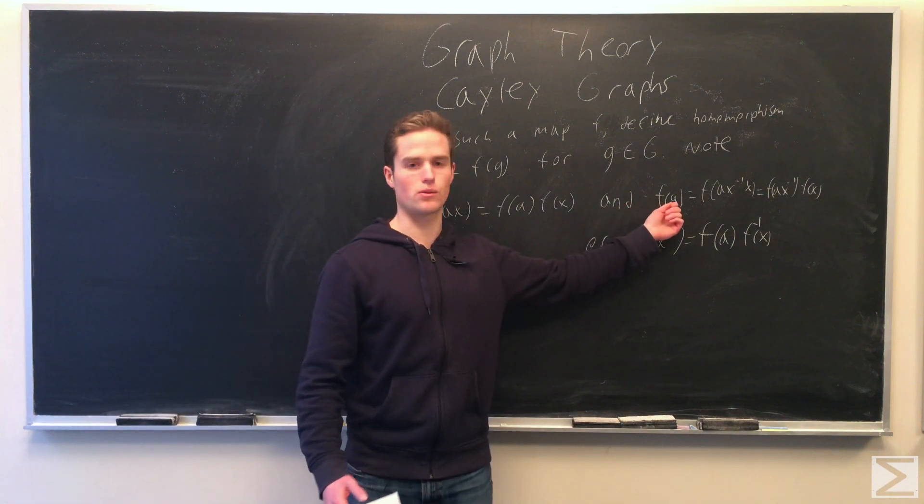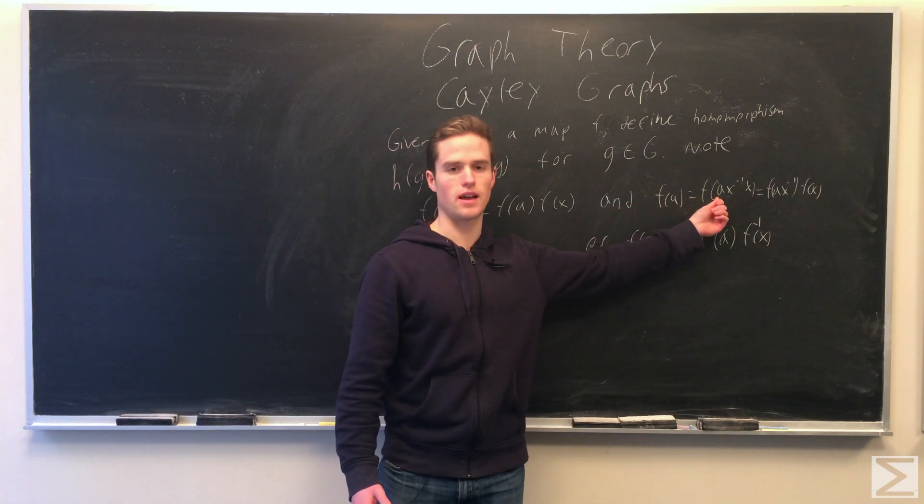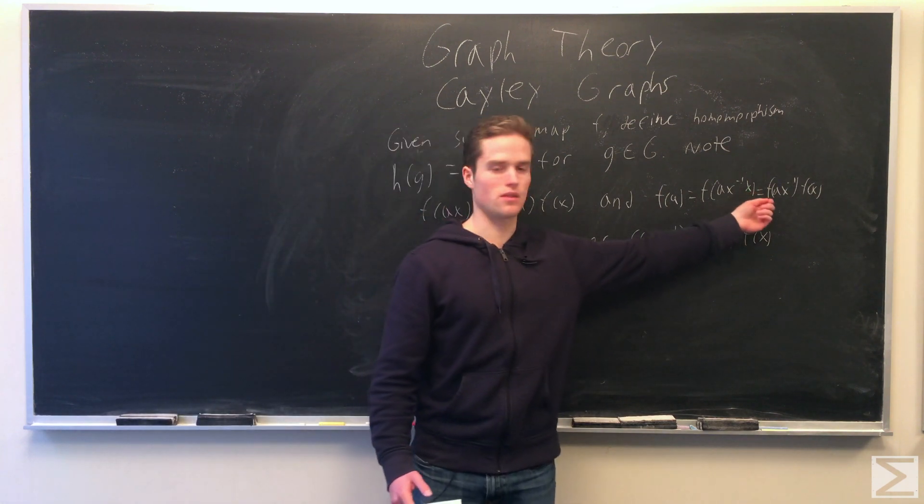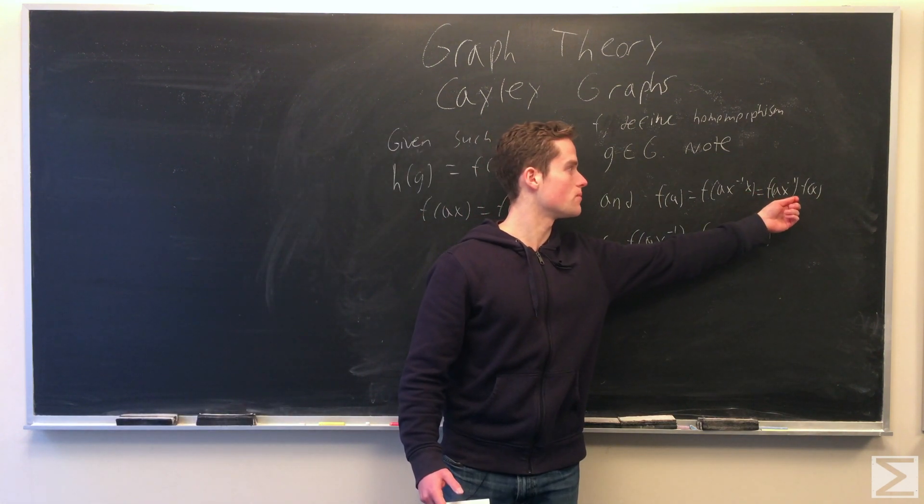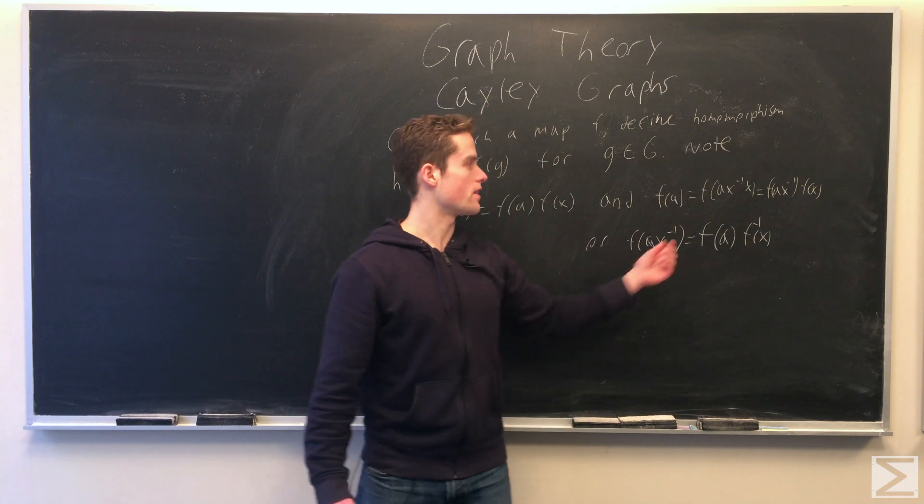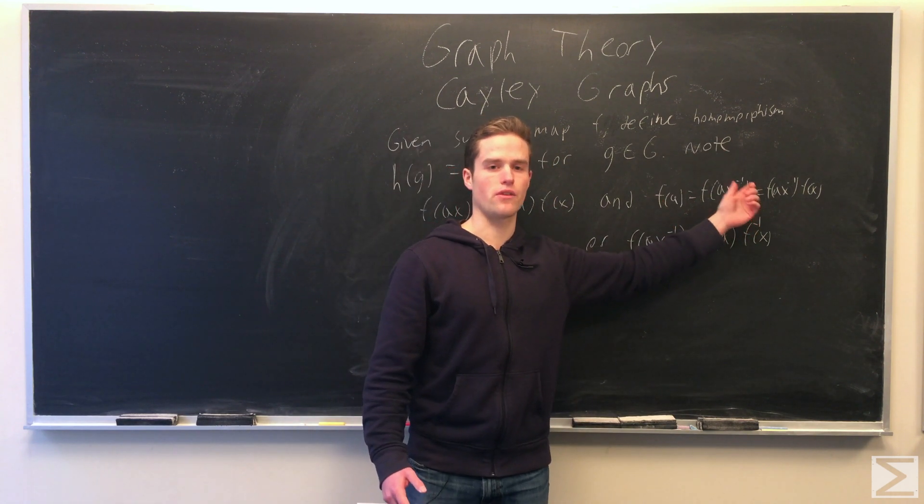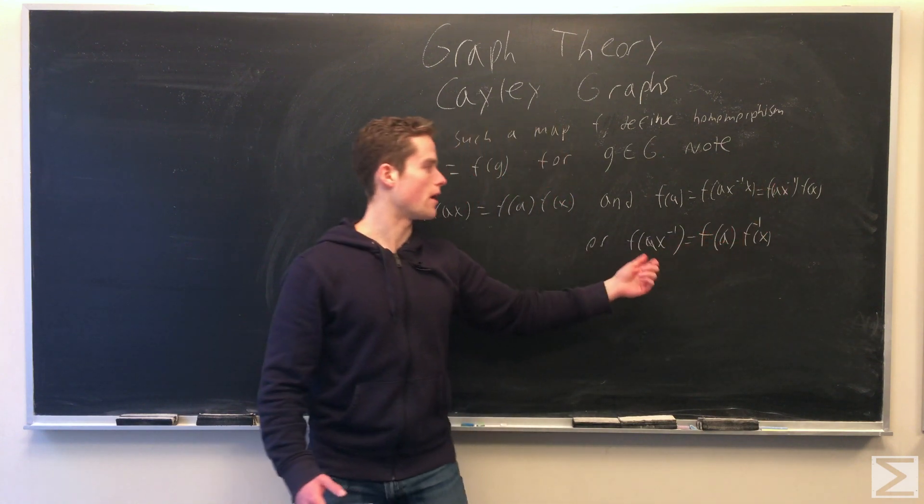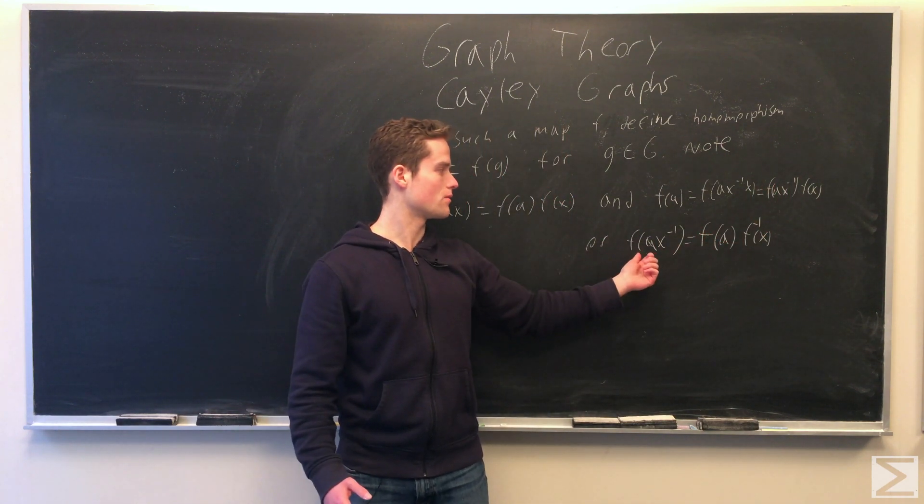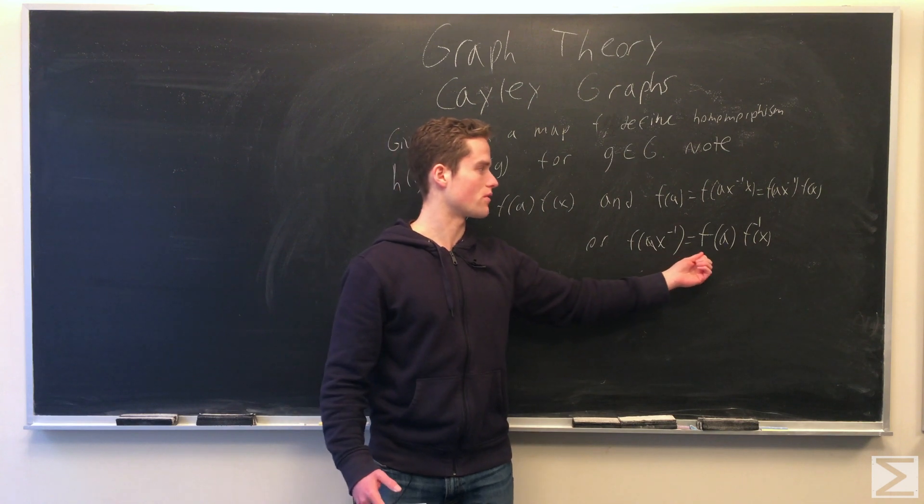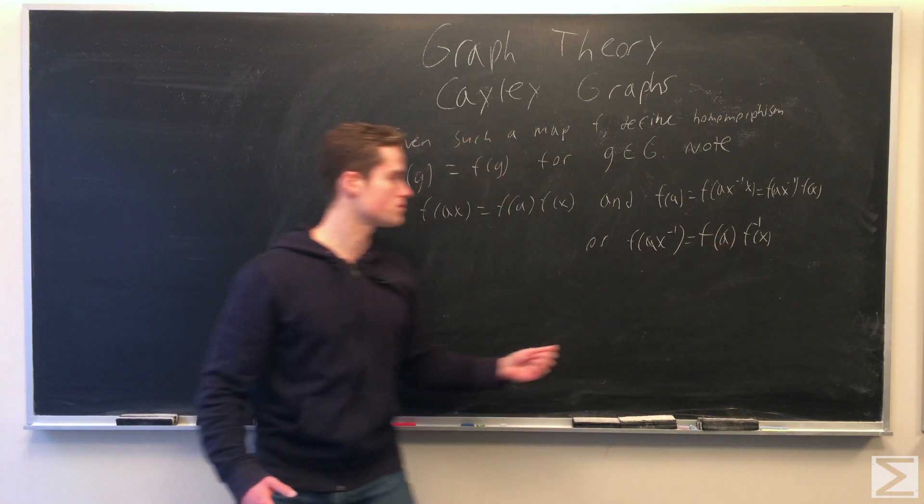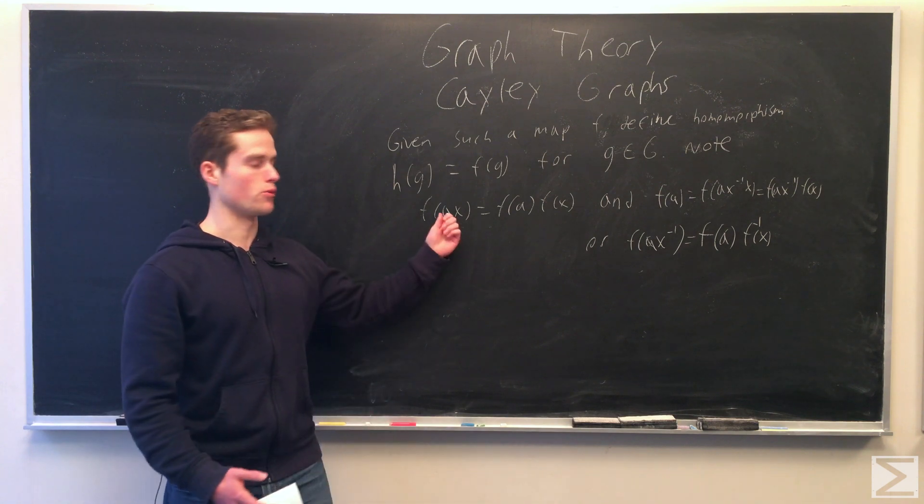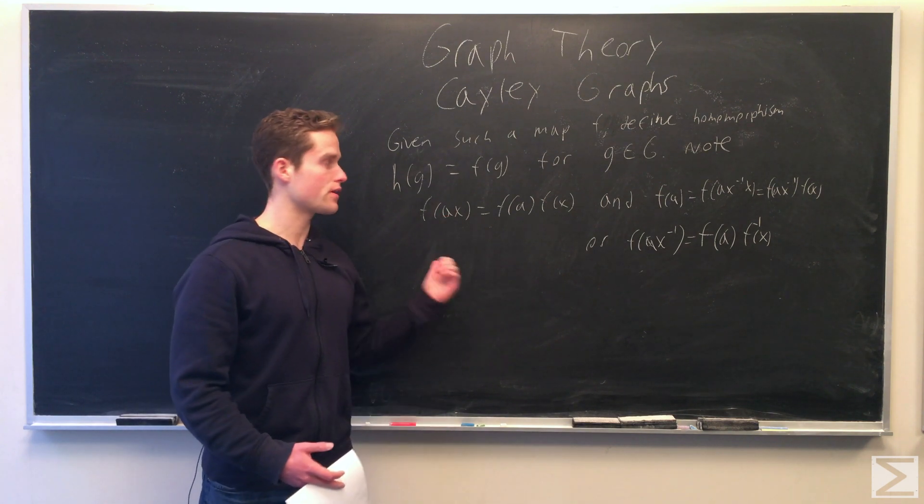And from this, F of A equals F of A, X inverse X. Using this, pulling out the X, we have that's F of A, X inverse, F of X. And then F of X inverse is in our graph. So taking the inverse to the other side, we have F of A, X inverse equals F of A, F inverse X. That shows that we can get a homomorphism from such a map.